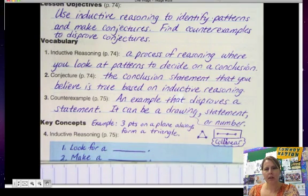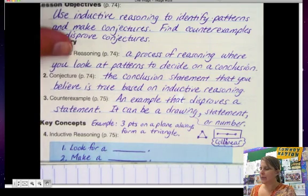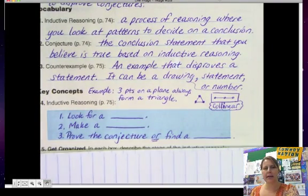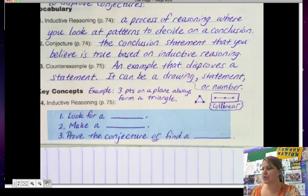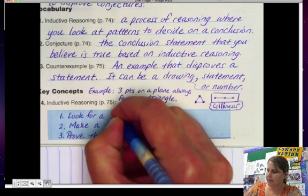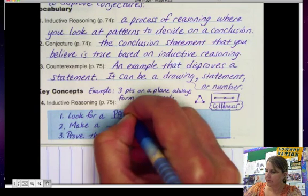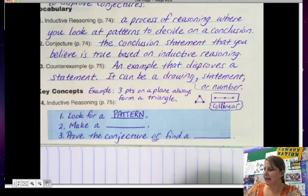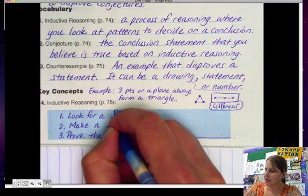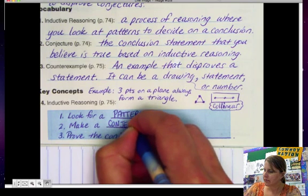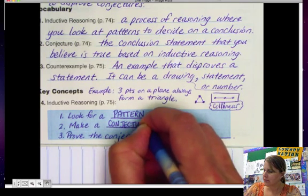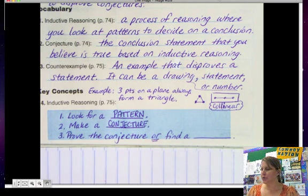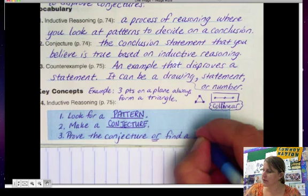Okay. Next we're going to look at how we use inductive reasoning. So there are three steps for inductive reasoning. First, look for a pattern. Next, make a conjecture. And last, prove that the conjecture is true or find a counterexample.